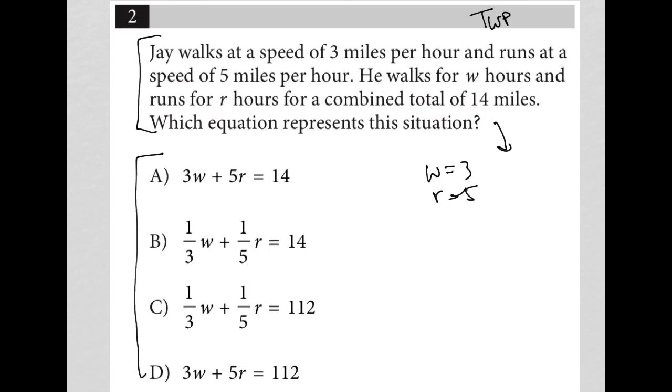He walks for W hours. Okay, so then I can't use this because I said W is three. So W is walk and he walks at a speed of three miles per hour. So 3W would represent how far he's walking. Right.